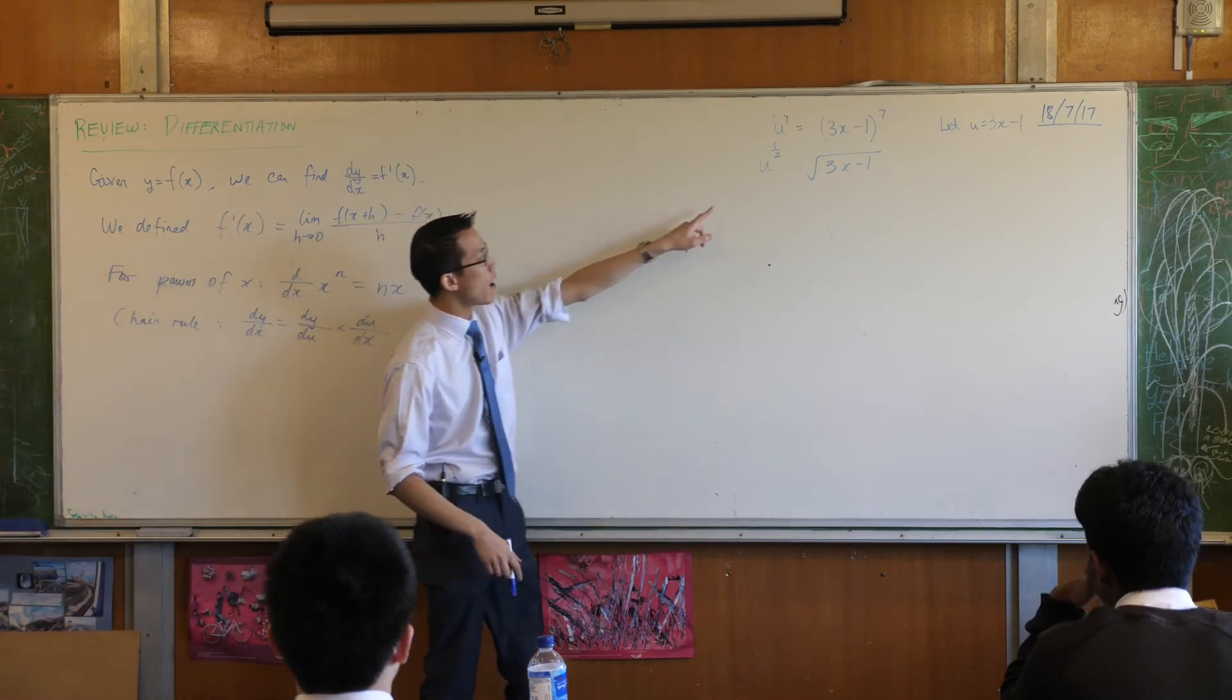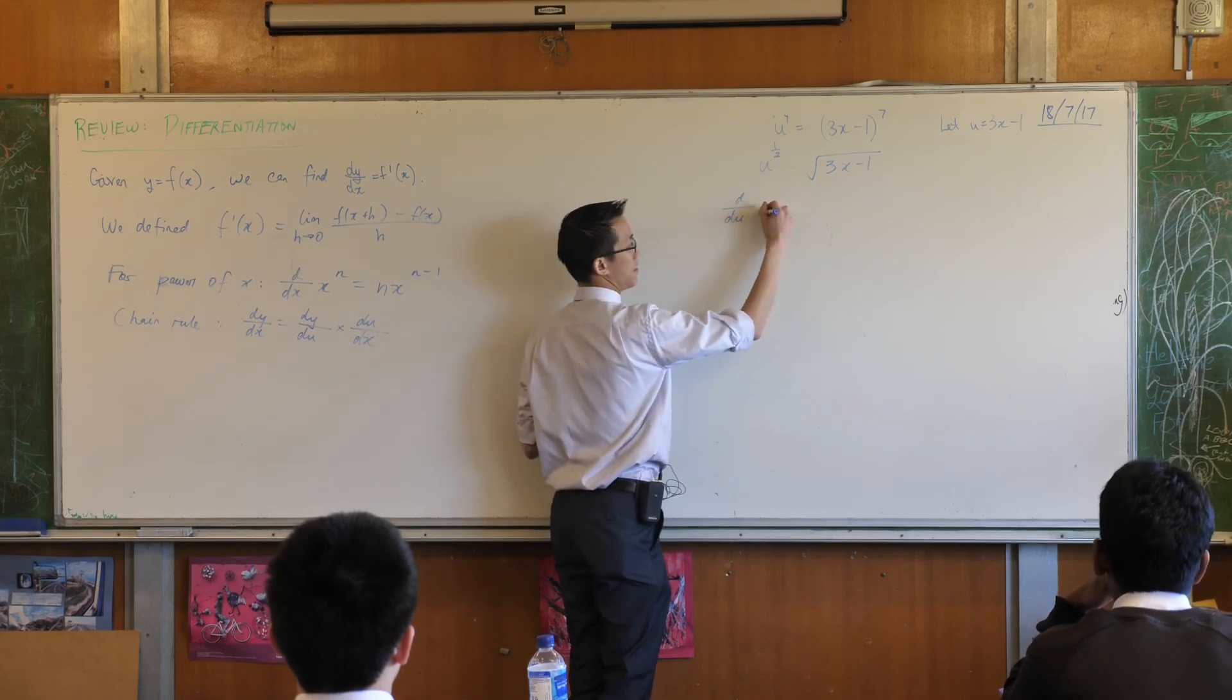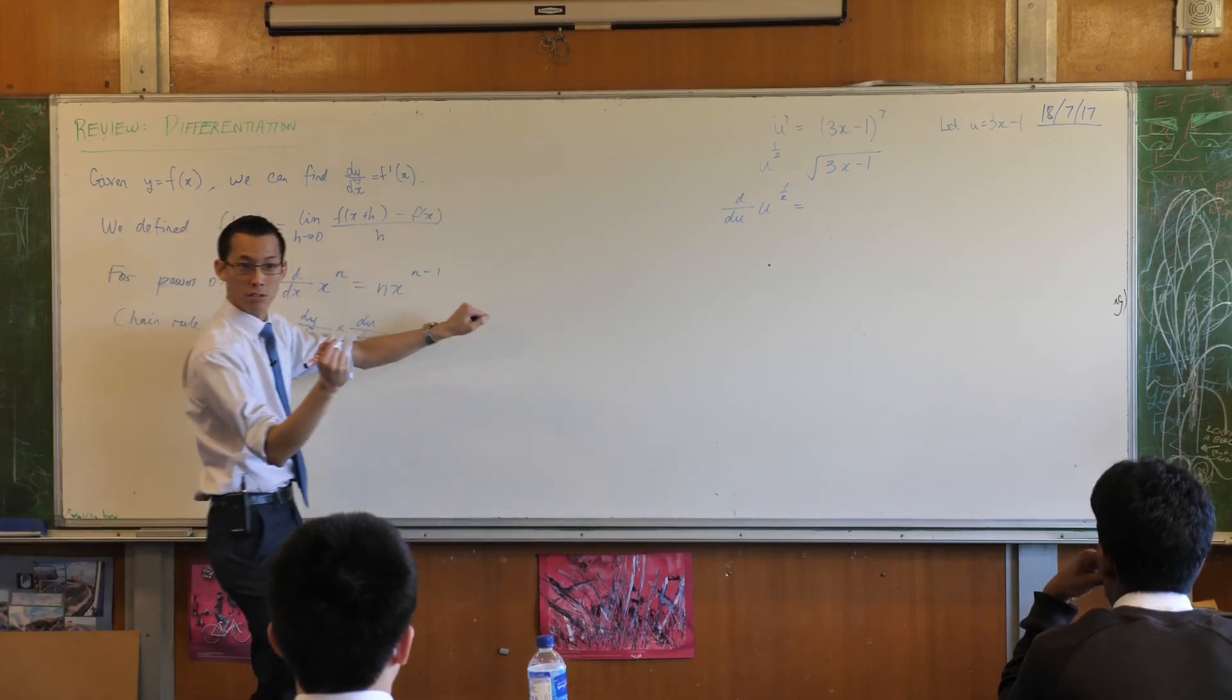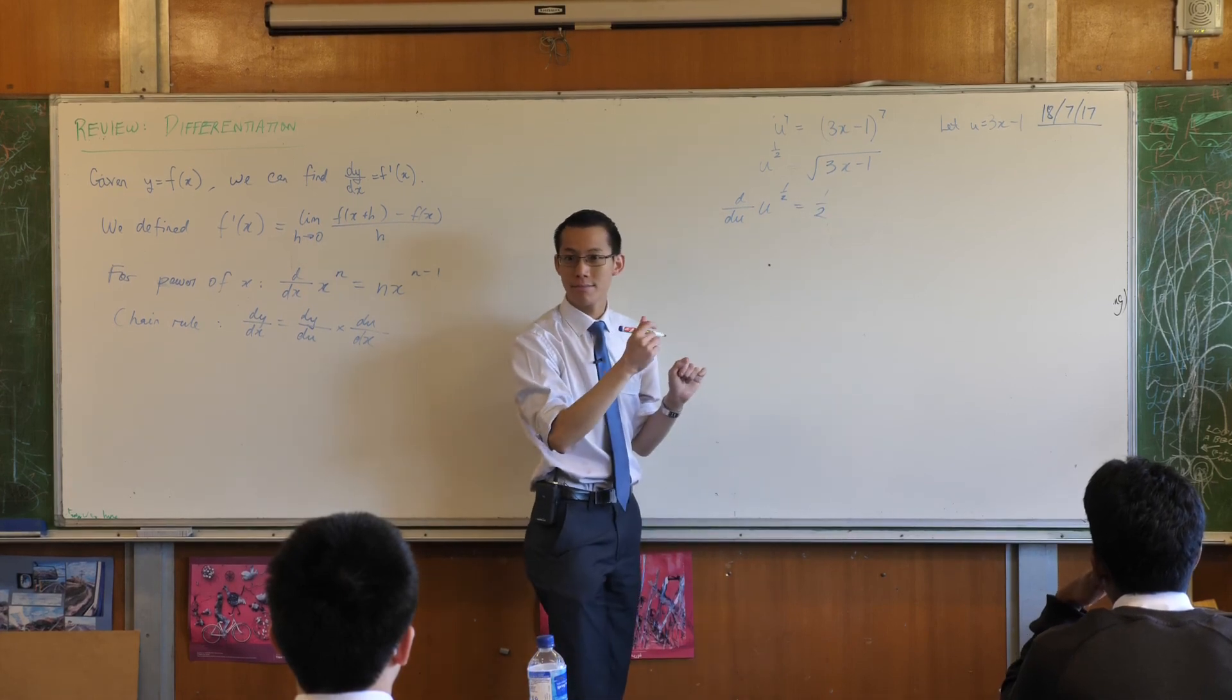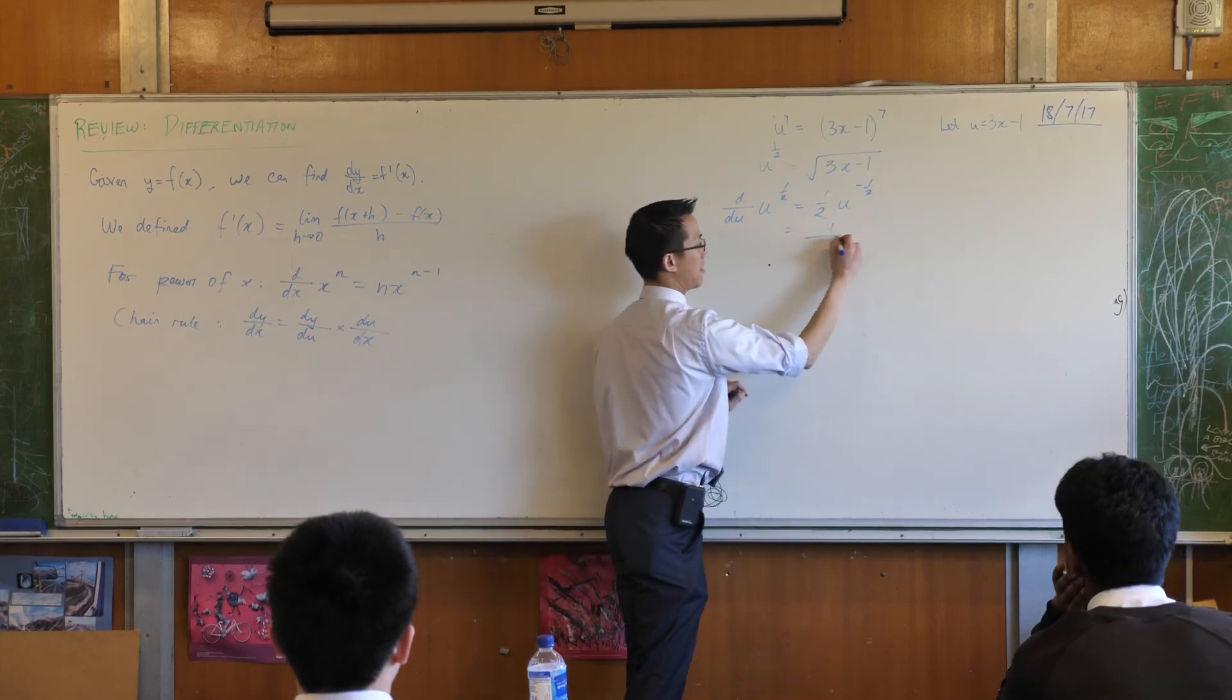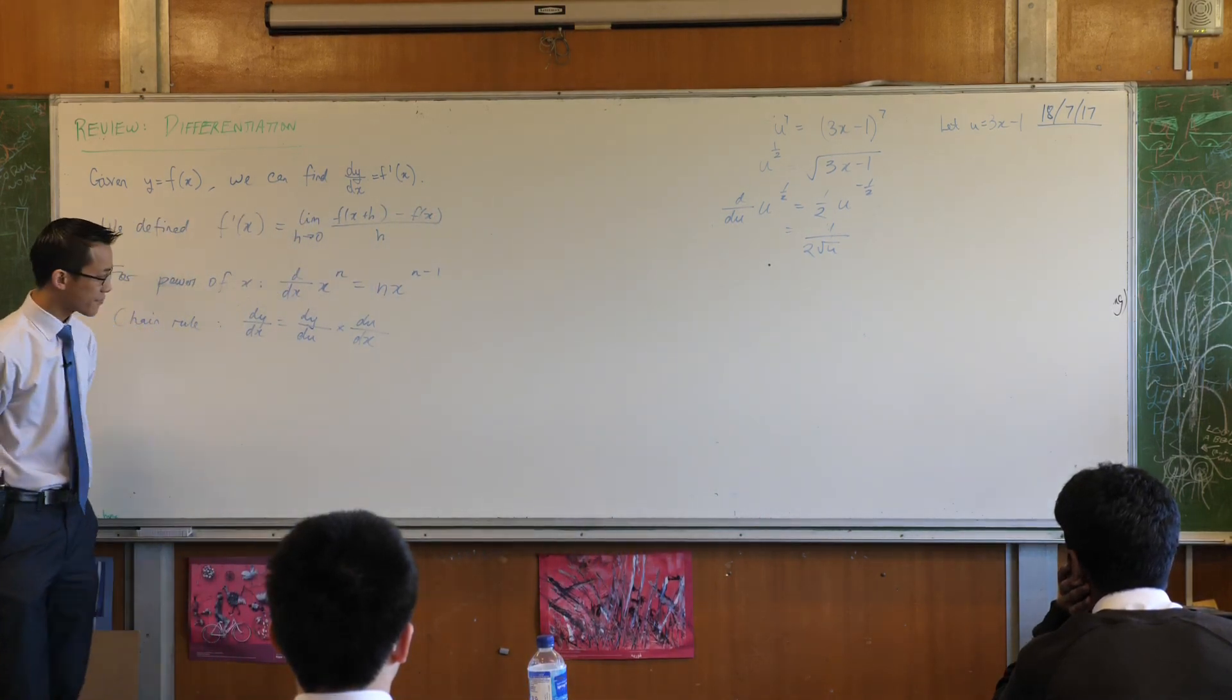In this case, dy by du, you differentiate this with respect to u. Can you walk me through? There's the rule right there. What am I going to do? Power comes out the front and then power reduces by 1, which in this case is negative a half. And of course, you could then write that with this on the bottom and then you replace u with whatever u was equal to, as we saw before. Cool. All right.